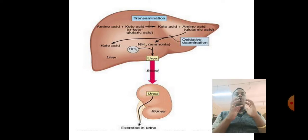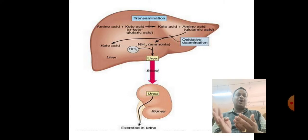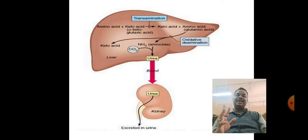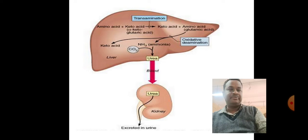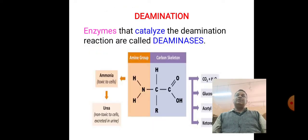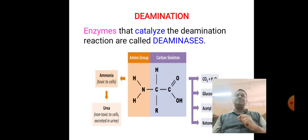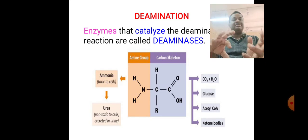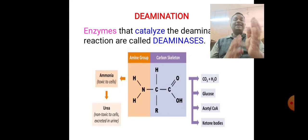Students, remember: once an amino acid loses its amino group, we call it an alpha-keto acid. An amino acid after losing the amino group becomes a keto acid. This process of deamination is also catalyzed and controlled by the enzyme group called deaminases, which remove the ammonia from the amino acid.